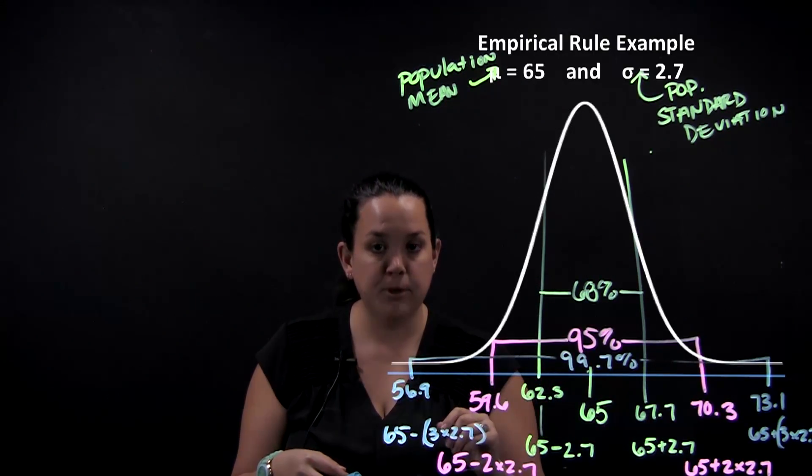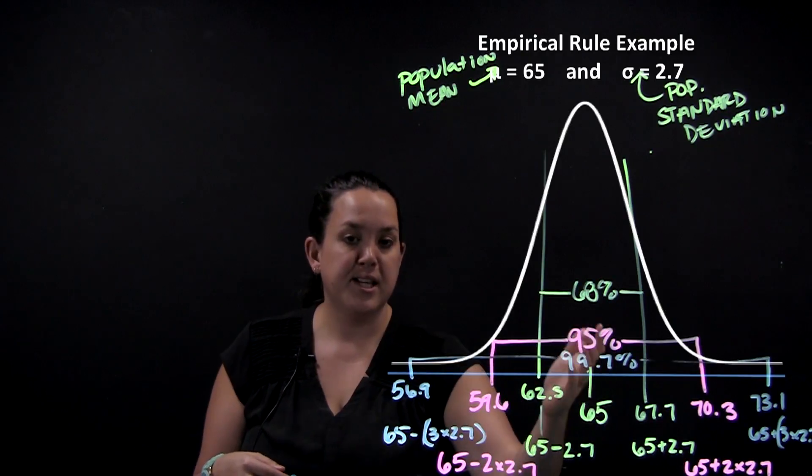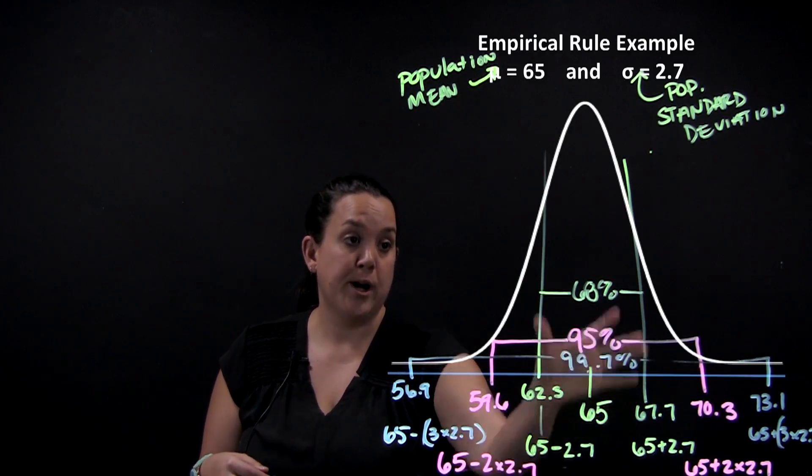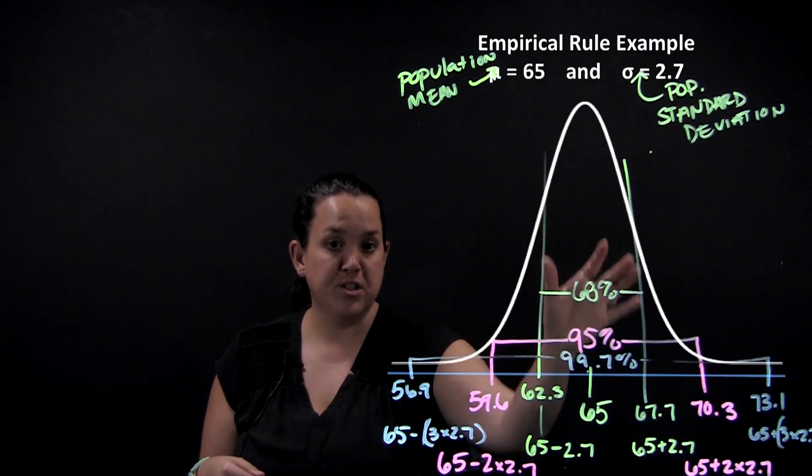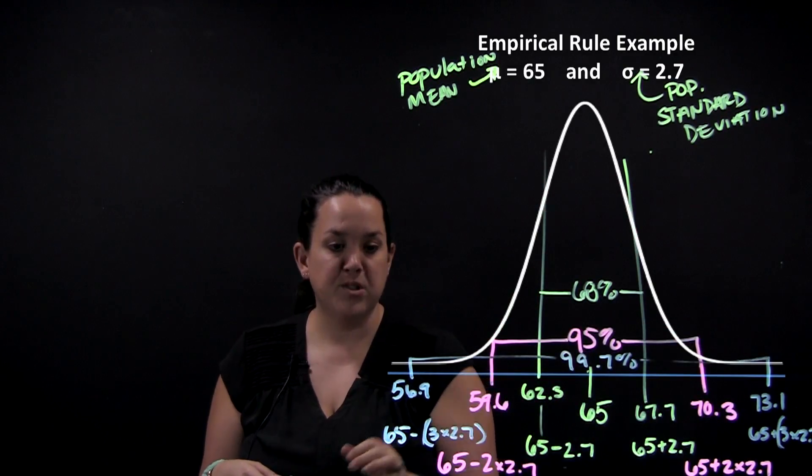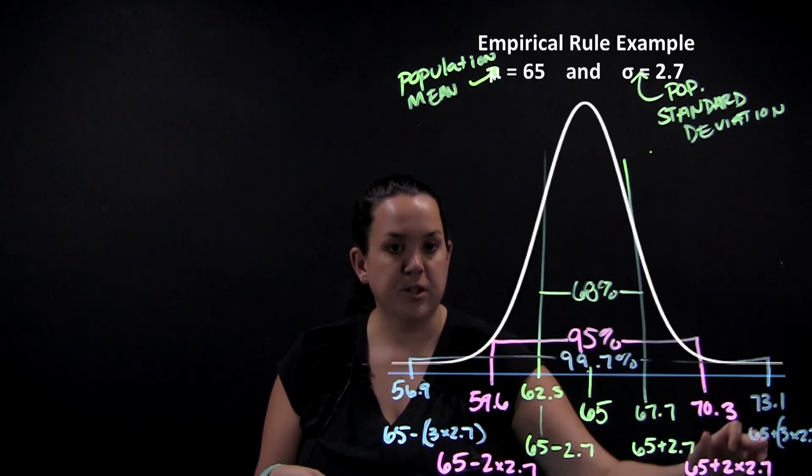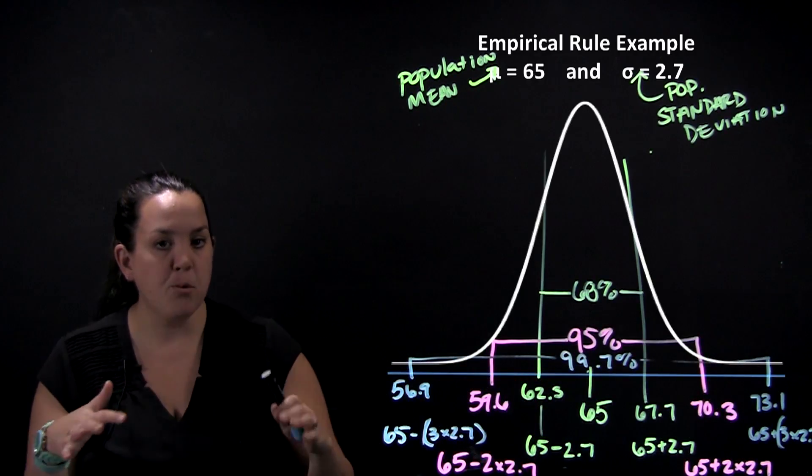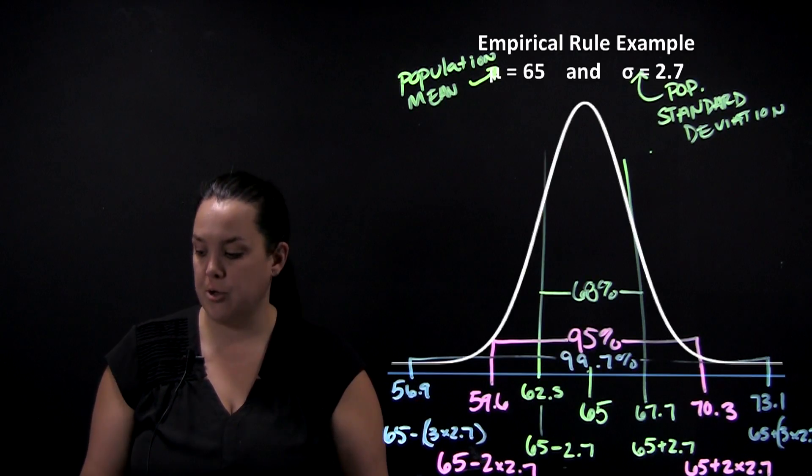So remember, the empirical rule is a snapshot of a population. It takes the mean and adds and subtracts one standard deviation to get you out to 68%. Two standard deviations bring you out to 95%, and then finally at three standard deviations you'll include almost everybody, 99.7% of the population.